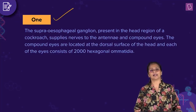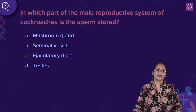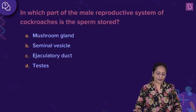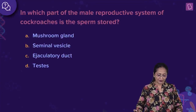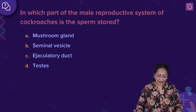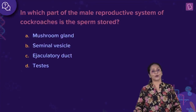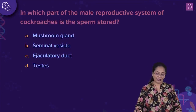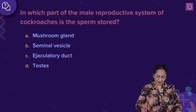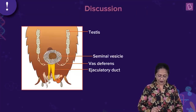Among the three statements only one was true — that is the right answer. Now let us look at this question: in which part of the male reproductive system of cockroaches is the sperm stored? Let me show you the male reproductive system of the cockroach.